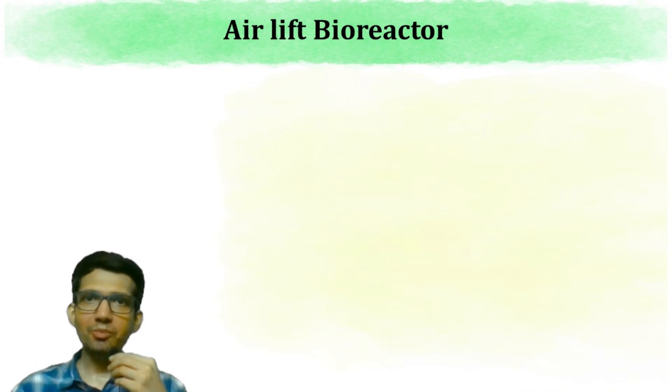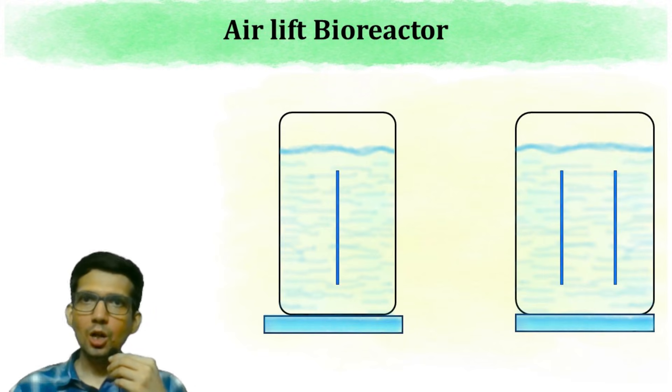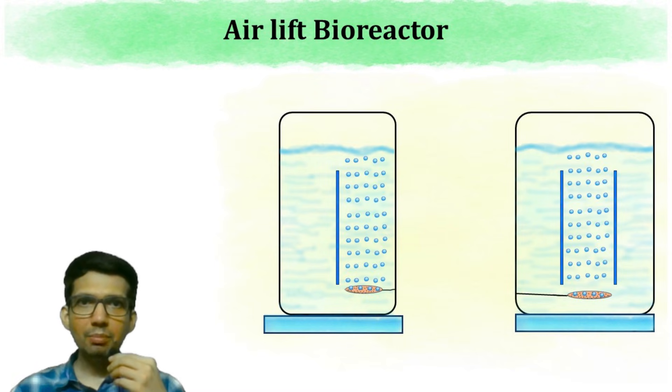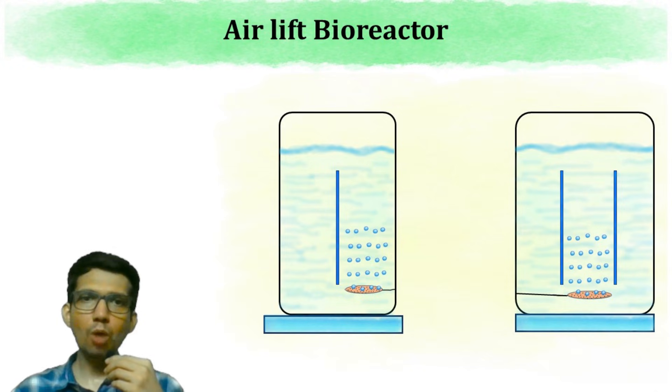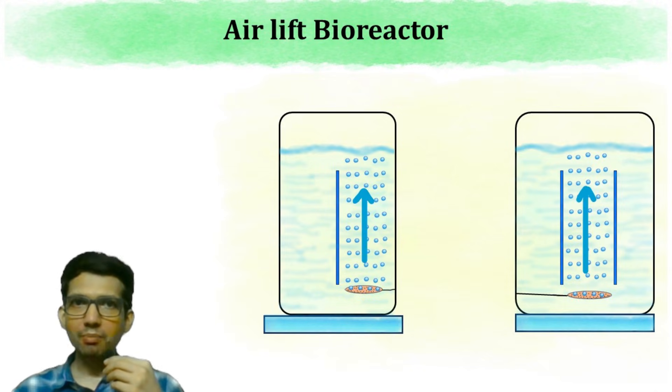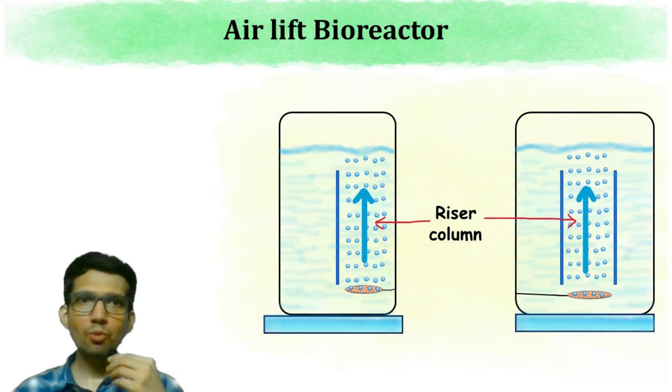Next is Air Lift Bioreactor. Look at these words and try to understand the meaning from this. In this type of bioreactor, we use air bubbles to bring the inner solution in motion. The bioreactor is divided into two parts. In one part, the air is introduced using a sparger at the bottom. Because of air bubbles, the solution will move up in this column. Hence, this column is known as the riser column.